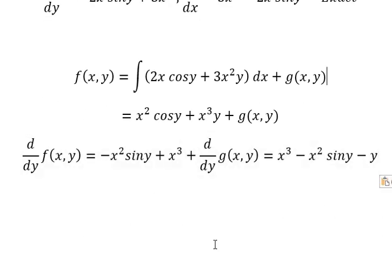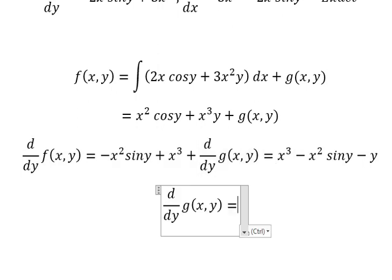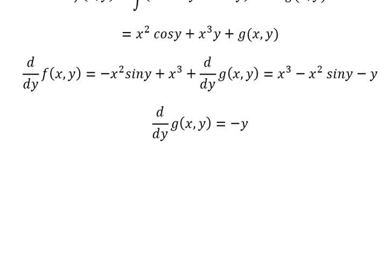Now we need to simplify both sides, and we have d/dy g(x,y) = -y.